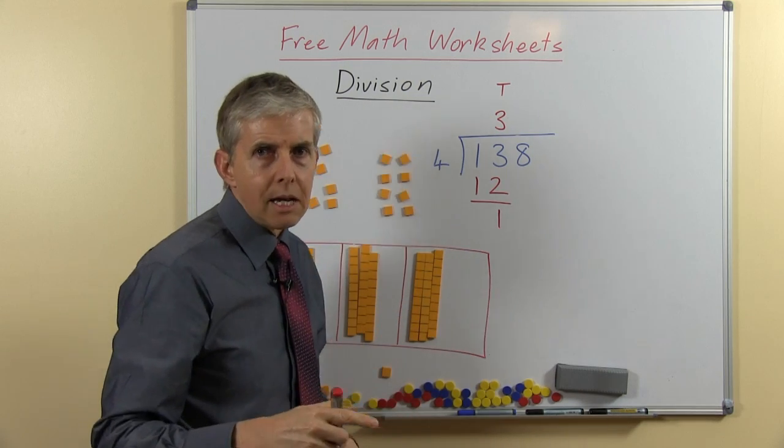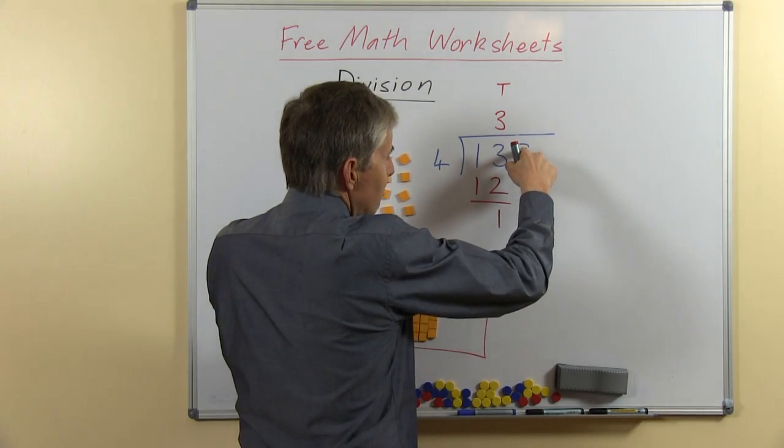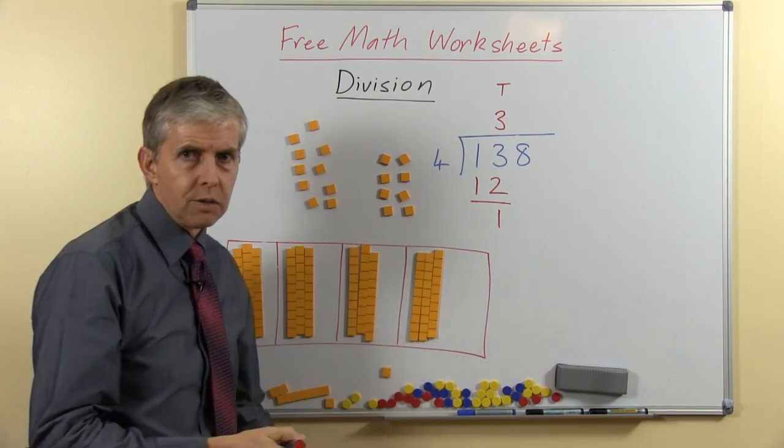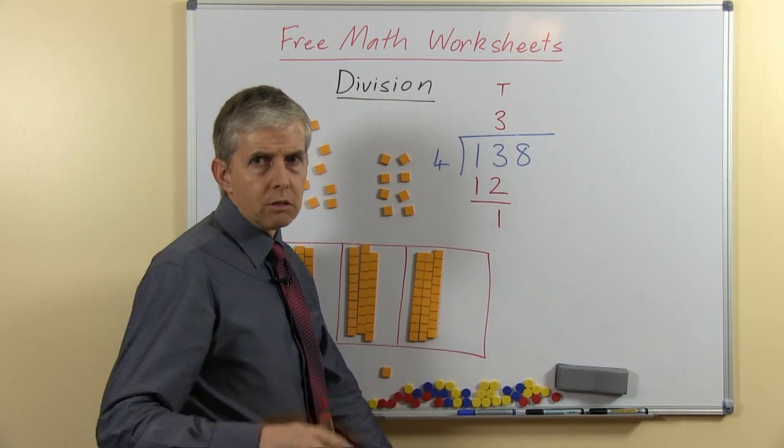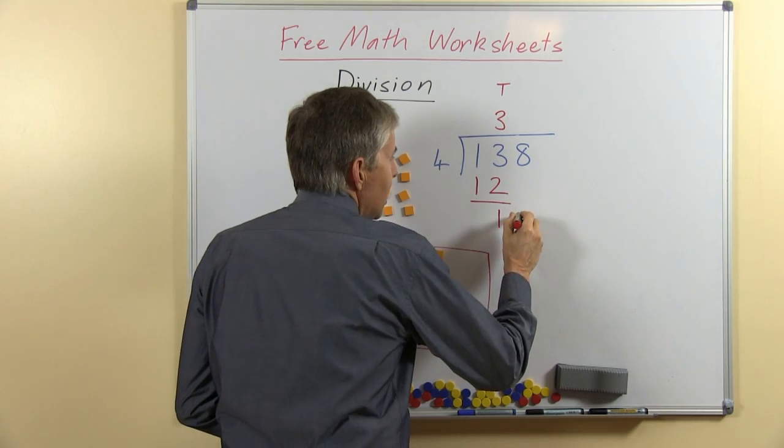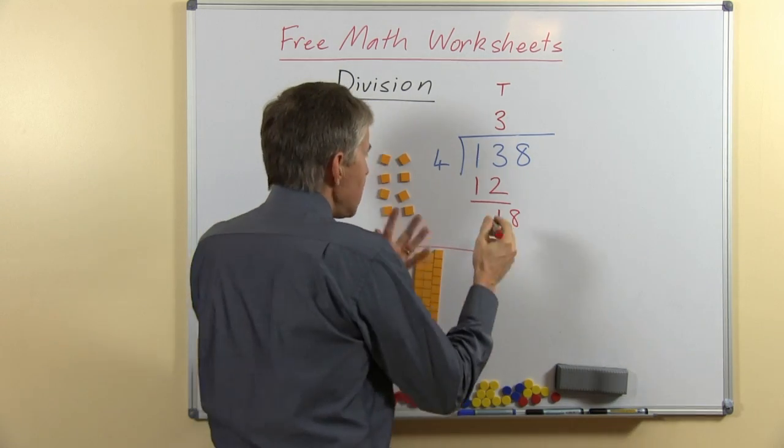Now this is where people say bring down the 8, and I used to say that as well, but it's not really about the symbol, it's not about moving the symbol, it's about how many ones do we have. So perhaps a better way of putting it is say write the 8 next to the 1 to show how many ones there are. There are 18 ones.